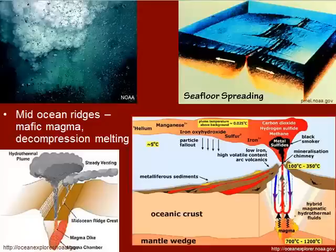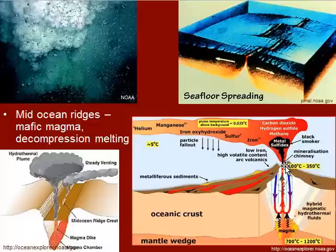We also have volcanic activity and landforms at mid-ocean ridges, where two plates are pulling away from one another. We get submarine volcanoes that develop along these mid-ocean ridges, and we get black smokers that develop as well — very similar features on the ocean floor.